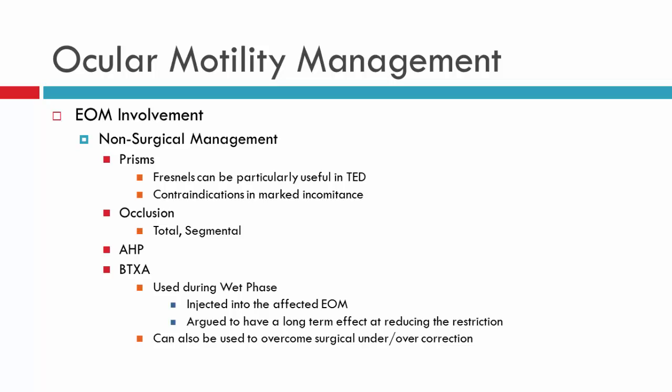Where prisms fail, you can look at occlusion — it might be total or segmental, so if the problem is primarily in abduction you could put a segment in that area. Botox is usually used in the wet phase, injected into the affected muscle, and it is suggested that in the long run this may reduce the amount of restriction. Botox is given when conservative measures such as prisms are unsuccessful, though patients often prefer prisms and occlusion. It can also be used to overcome surgical under- or over-correction so patients can regain and lock into binocular single vision.